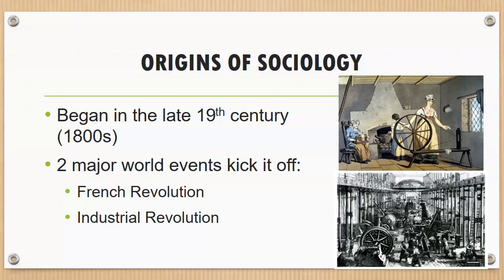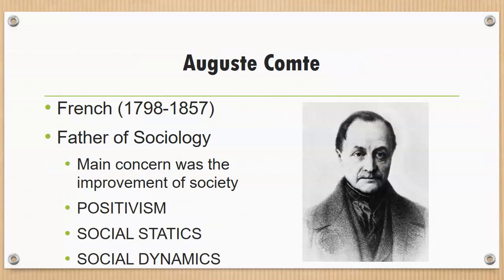Those ideological and social changes ultimately led to the science of sociology. The first person credited with creating the science is Auguste Comte, who is French, and he's considered the father of sociology. Some of his ideas are still held today.